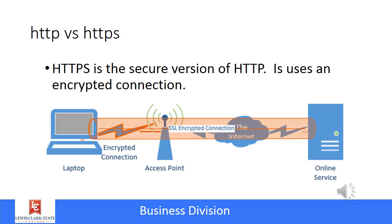HTTPS is the secure version of HTTP. It actually encrypts the information so that the information you transfer over the internet cannot be intercepted — or if it could be intercepted, it wouldn't be able to be read. Anytime you're doing banking, financial transactions, or buying something using your credit card, you want to ensure that the protocol you're using is HTTPS.